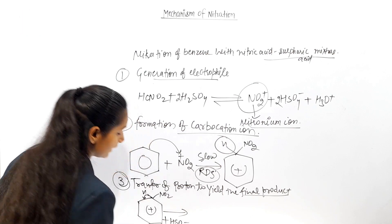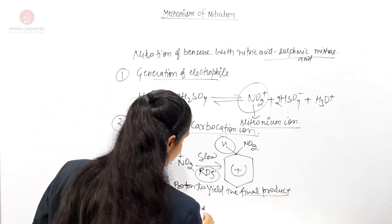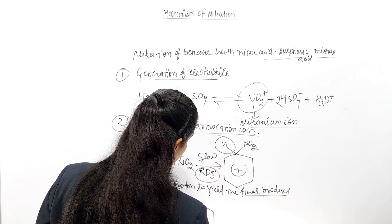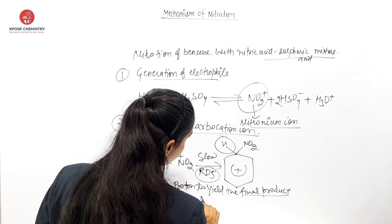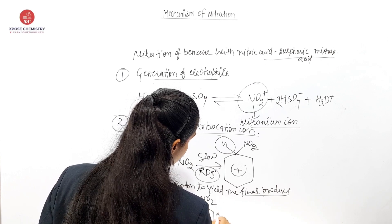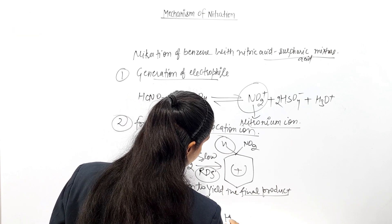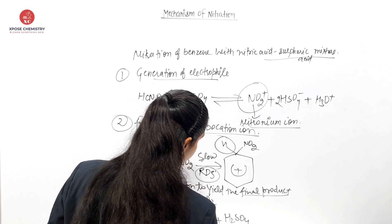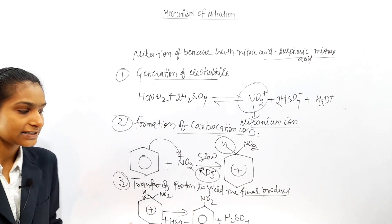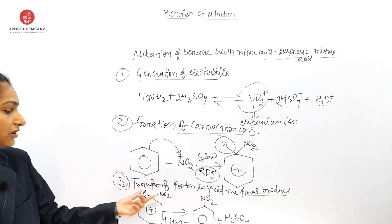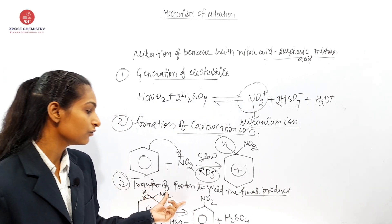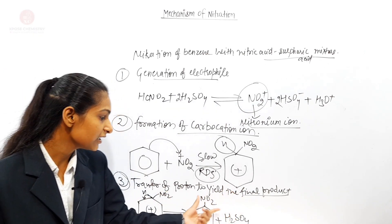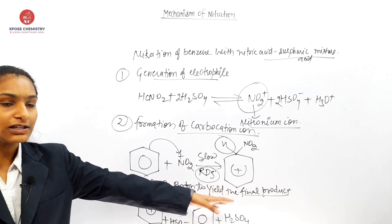HSO4 negative is involved here. The proton transfers from the aromatic ring — with H combined with HSO4 negative — to yield the final product. So this was our final step: transfer of proton from the aromatic ring to yield the final product.